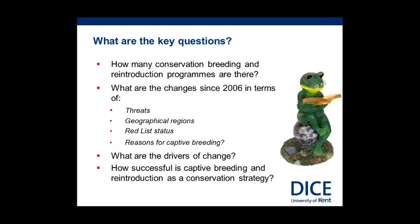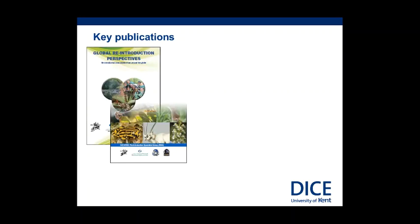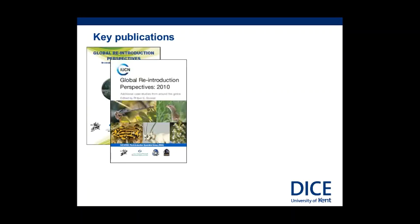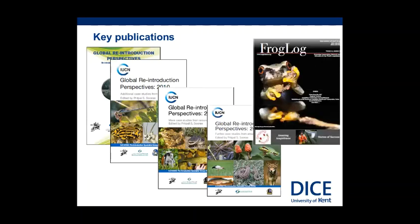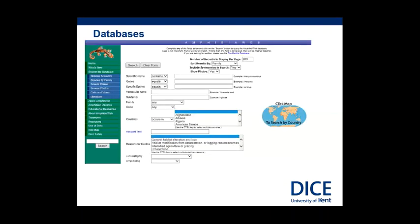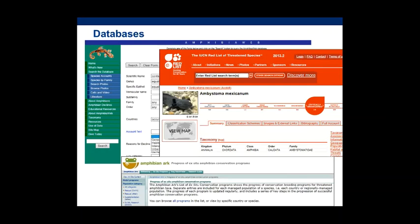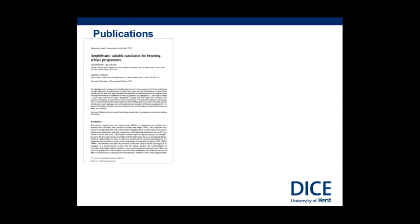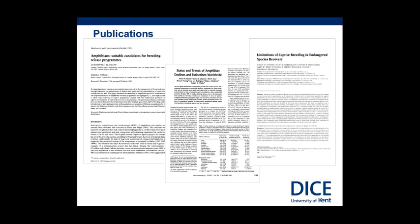Probably the most fundamental question: how successful is captive breeding and reintroduction as a conservation strategy for amphibians? We adopted a multi-faceted approach, reviewing and interrogating a range of publications, including Nikki Suri's wonderful Global Reintroductions Perspectives document. We sifted through FrogLog over the years, and interrogated databases such as AmphibiaWeb. Amphibian Ark was probably the most comprehensive source of information, and we also used the Red List, plus standard search terms for peer-reviewed publications.